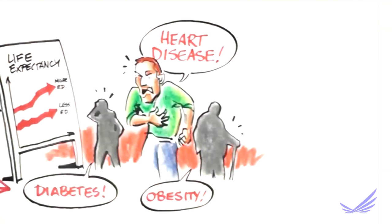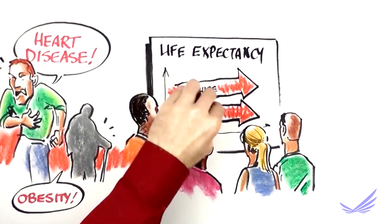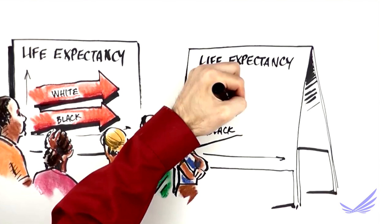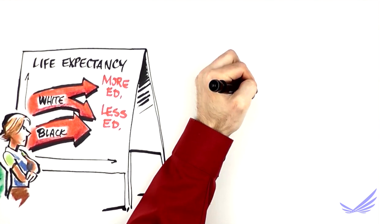Health disparities disproportionately impact minorities and the poor. But differences in life expectancy by education affect everyone. In fact, although most Americans have enjoyed increases in life expectancy for more than a century, an alarming trend has recently emerged. Life expectancy has actually been decreasing for certain groups with less education.